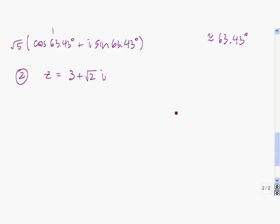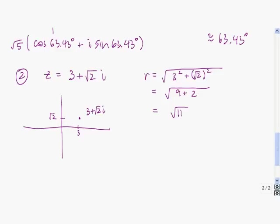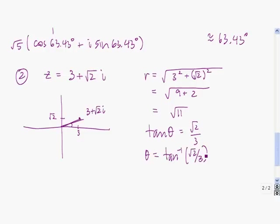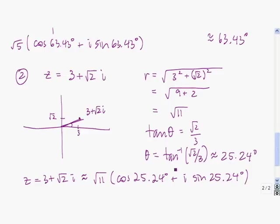Now try this for the complex number 3 plus root 2 times i. First find R as the square root of A squared plus B squared. Then find theta using tangent of theta equals B divided by A, so theta equals the inverse tangent of root 2 over 3, which gives about 25.24 degrees. That gives us the trigonometric form of 3 plus root 2 i.